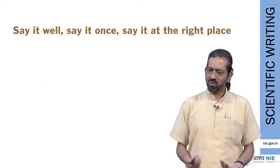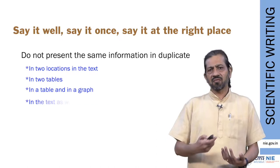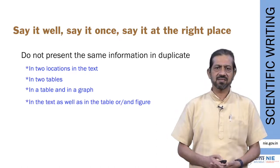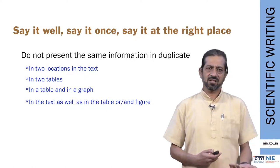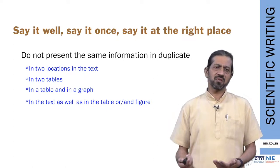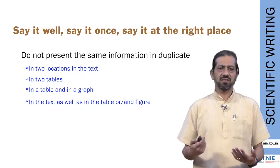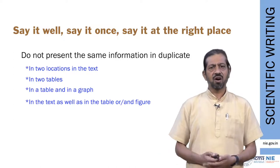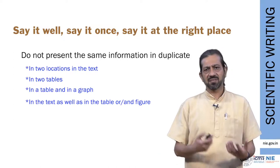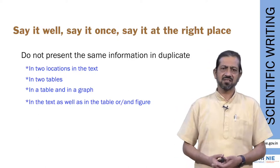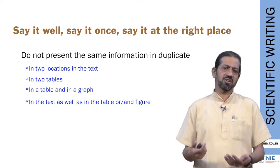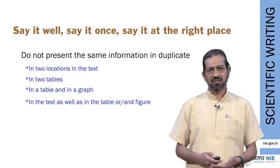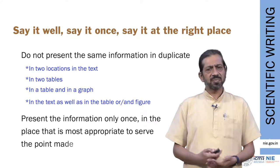Say it well, say it once, and say it at the right place. Avoid providing the same information in multiple places in the manuscript. Something written in the methods need not be repeated in the results. Something in one table may not be repeated in another table or a graph. And everything in a table or figure need not be written out as text in your results section.